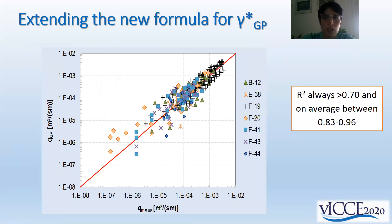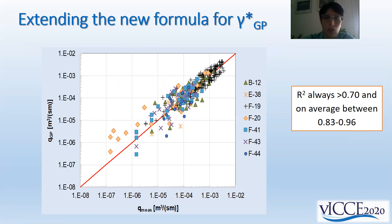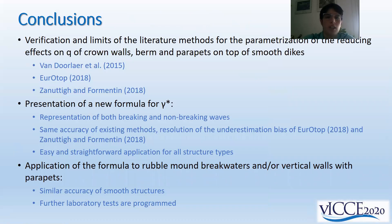We see in this slide the comparison between predicted values in the ordinate and measured values of Q for all the different datasets. The performance achieved is similar to the performance we obtained for smooth structures only. We thus have an overview of the literature methods available for the parameterization of reducing effects on Q of crown walls, berms, and parapets on top of smooth structures, having seen their main limits.